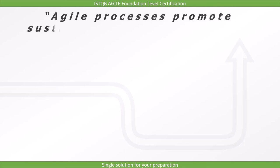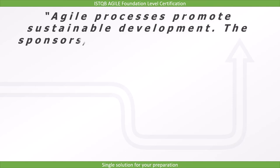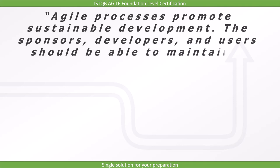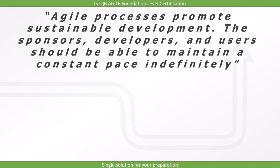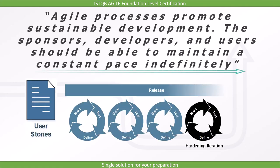The eighth principle is: Agile processes promote sustainable development. The sponsors, developers, and users should be able to maintain a constant pace indefinitely. Once we get the requirement, we make release planning. A single release can have multiple iterations of small duration, and in each iteration a few features will be developed. With this, we develop software at a sustained pace, and each member of the team must work at a constant pace.